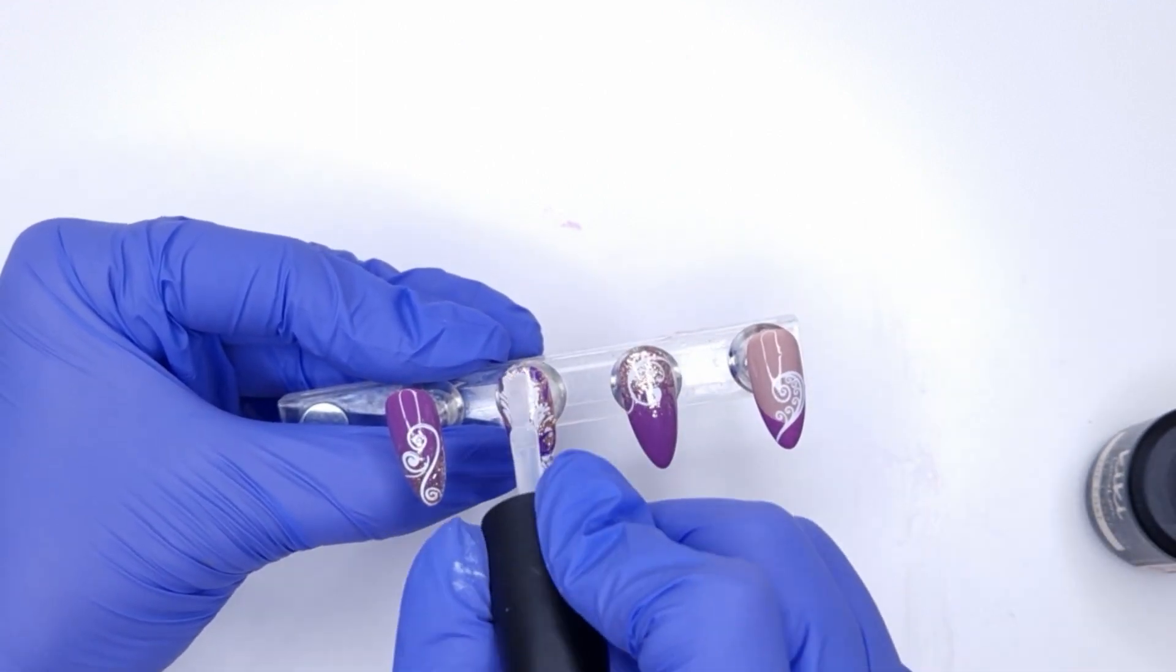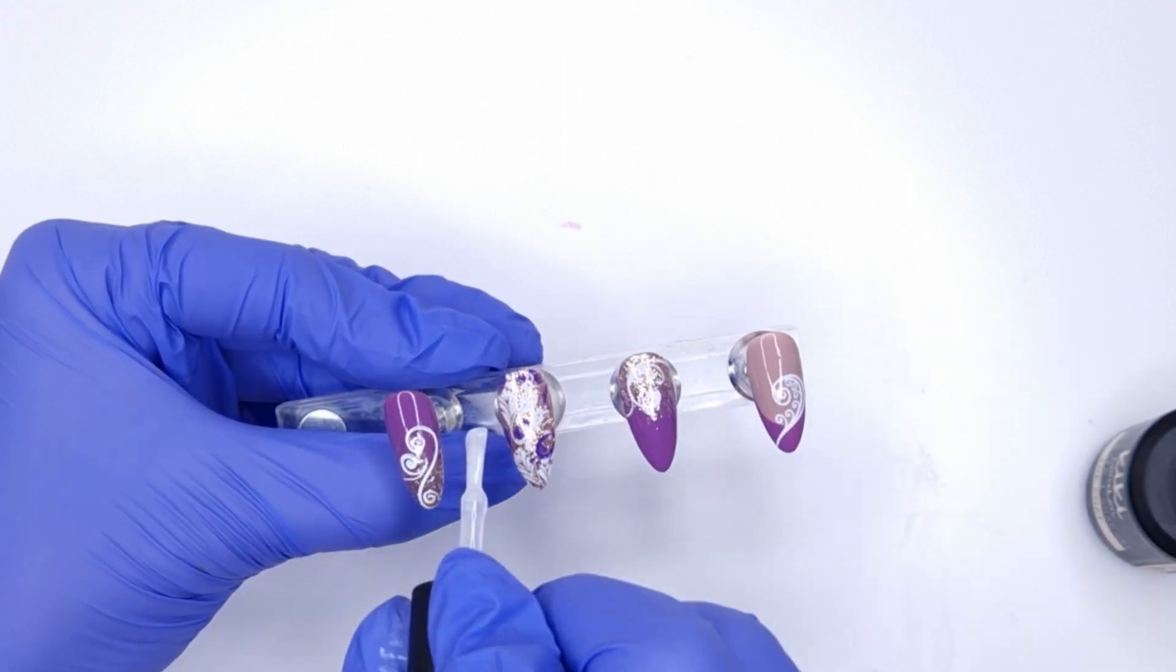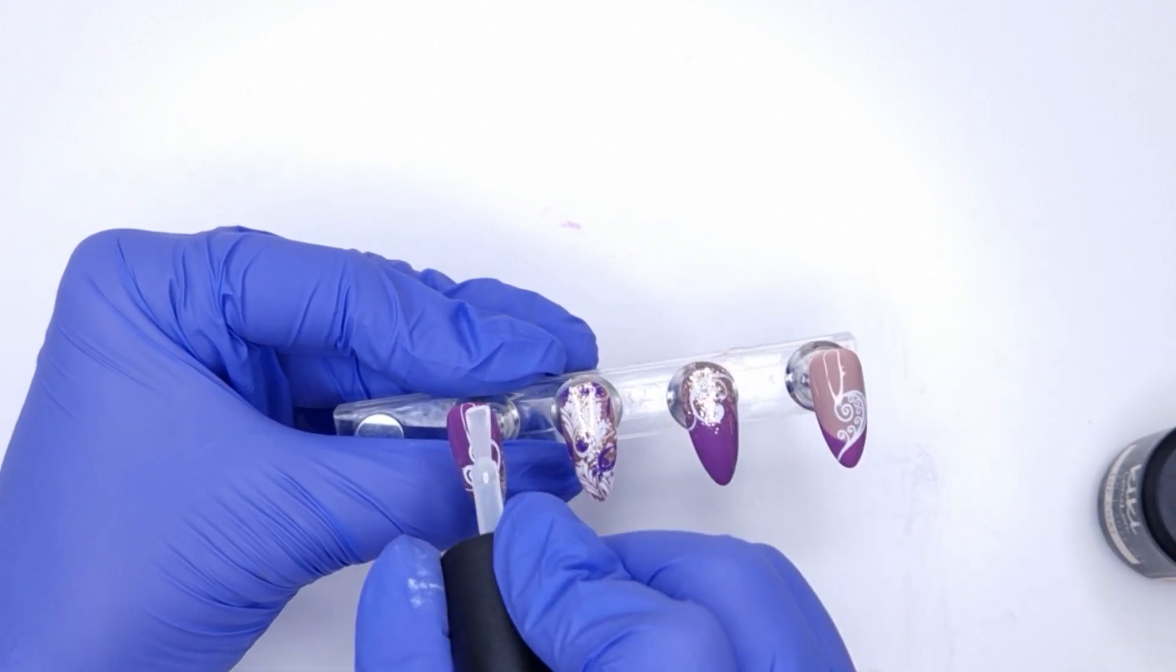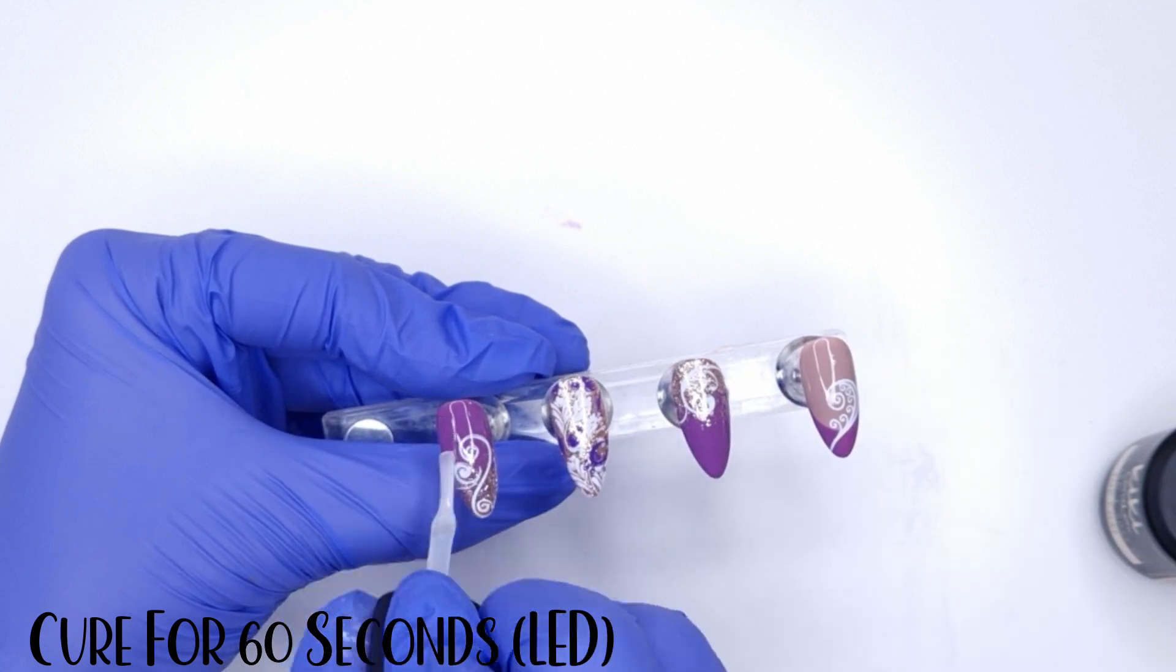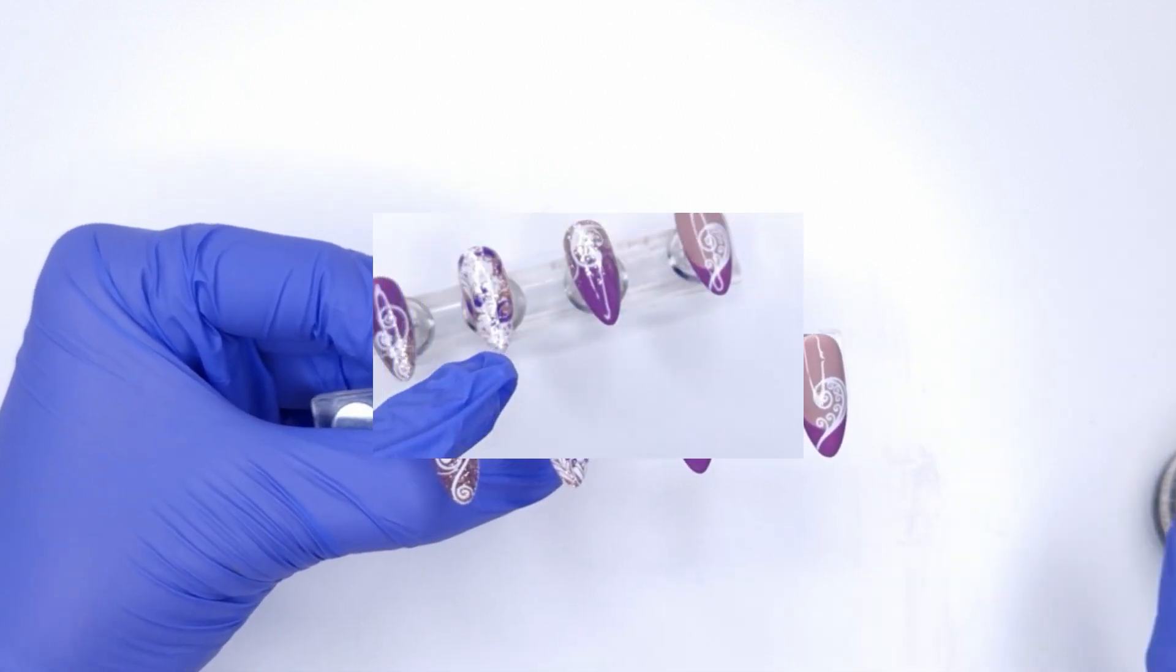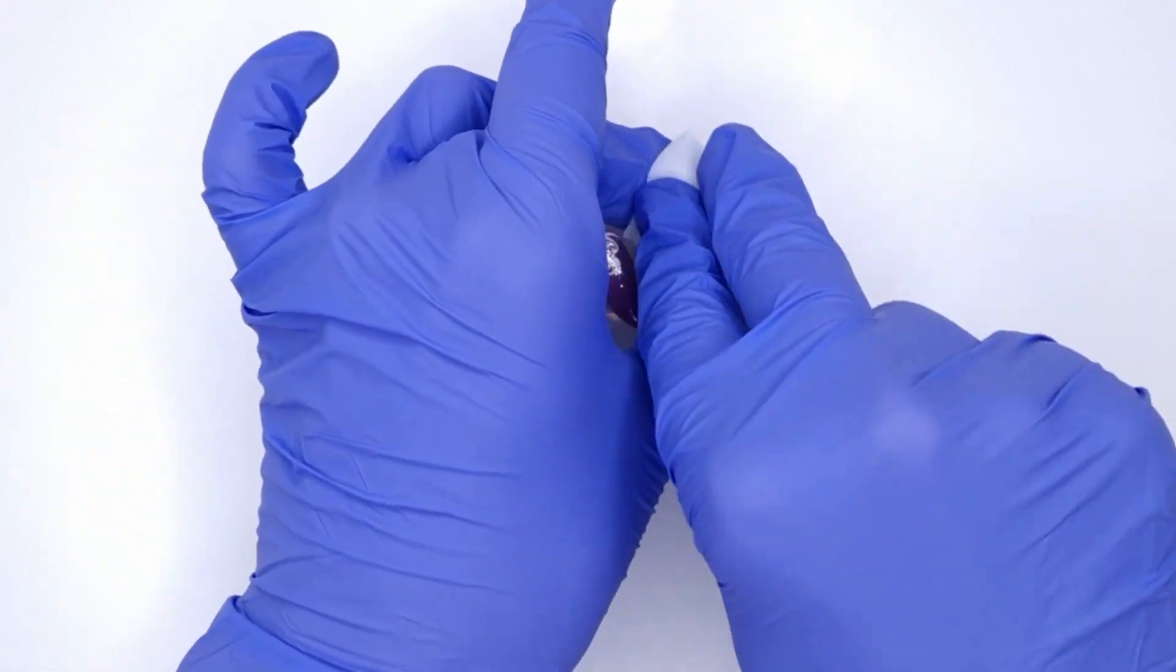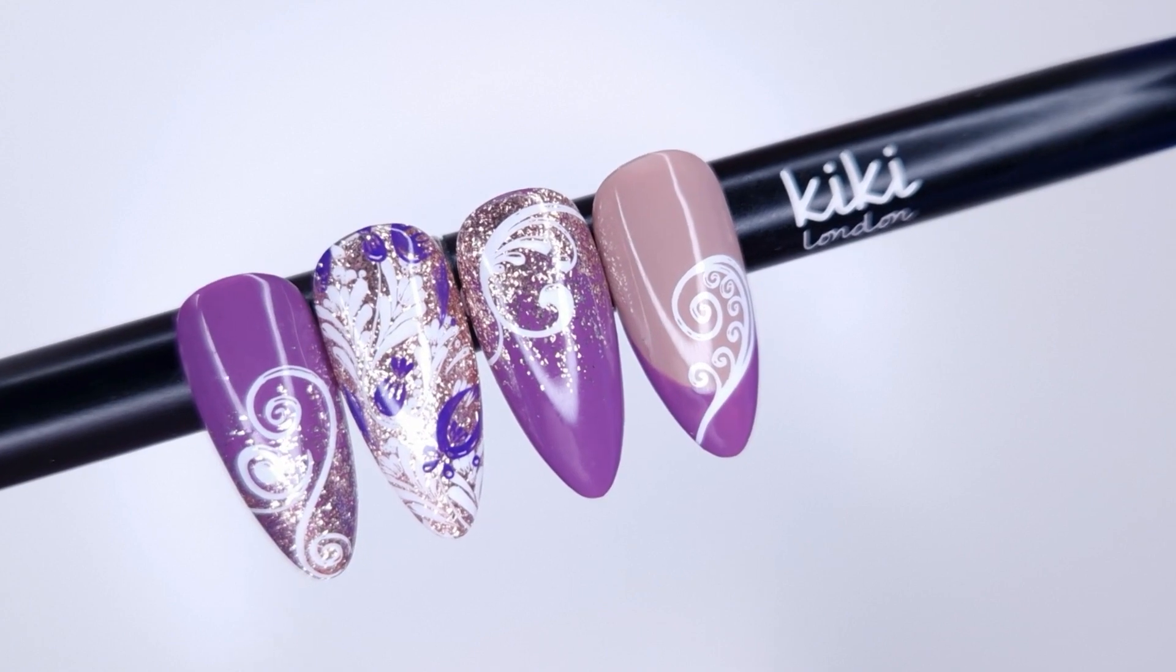I do find that certain top coats, I think it's more because of the stamper rather than stamping polish but sometimes they can leave oils on the nail and then it makes your top coat separate. I just don't get no separation with this top coat so it's my go-to for over any kind of stamping and it leaves off a beautiful shine. You just need to wipe away that tacky inhibition layer and this is the finished result.